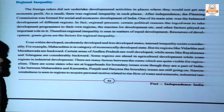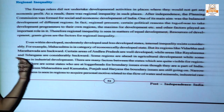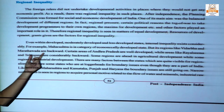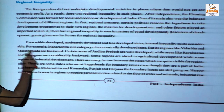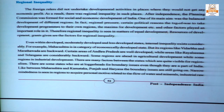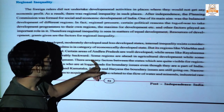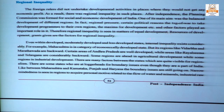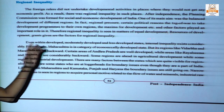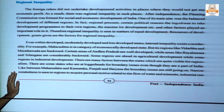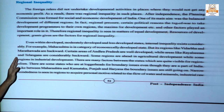Certain areas of Andhra Pradesh are well developed, while some of their own areas like Rayalaseema and Telangana are considerably backward. Now Telangana is starting to gain economic profit because Hyderabad is included in Telangana. That is why some regions are ahead in agricultural development while some are ahead in industrial development. There are so many factors between the states and the centre that lead to regional inequality.